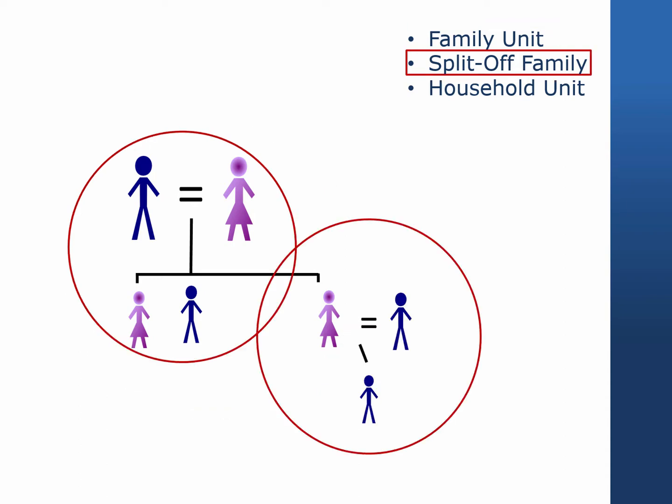A split-off family consists of a person or group of people, at least one of whom is being followed, who leave a main PSID family to form a new family unit. The new family unit must be economically independent and in a separate household unit. The person or group of people in the split-off family must be followable. Individuals who move into an institution such as college or prison or another family unit within the panel study are not considered split-offs.